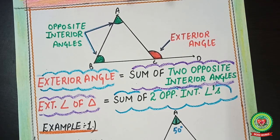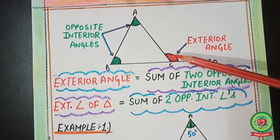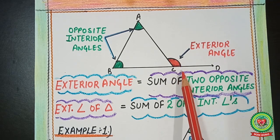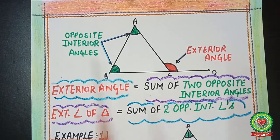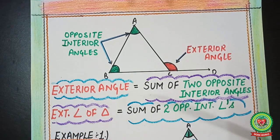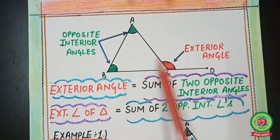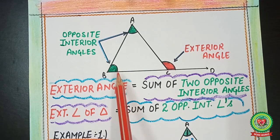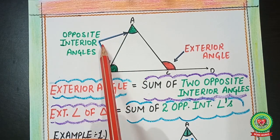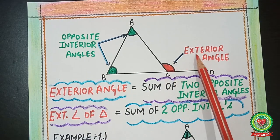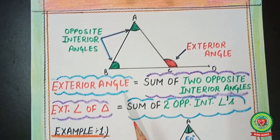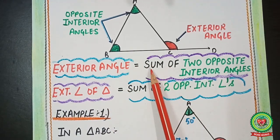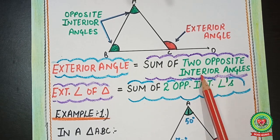Now let's discuss the property. Here you can see a figure of a triangle in which I have taken one exterior angle and the other two opposite interior angles. I am saying opposite interior angles because these two green angles are on the opposite side of the exterior angle. From this figure we can derive the exterior angle property: the exterior angle is equal to the sum of the two opposite interior angles.